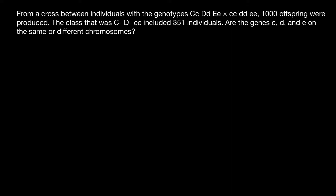Let's first assume that we have just one gene. One gene in one individual would be represented by two alleles. These alleles can be of the same kind or of a different kind. Let's imagine that here we have a male individual with two homologous chromosomes. On one chromosome he has the dominant allele C, and on the other he has the recessive allele C.